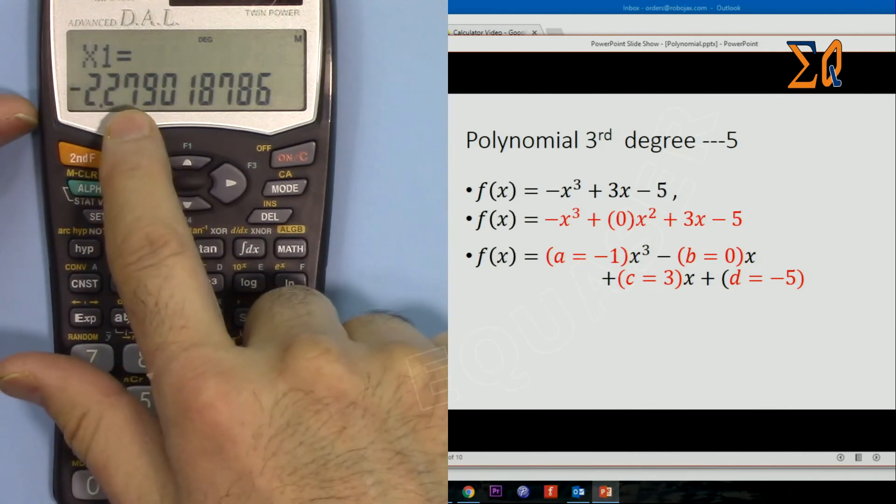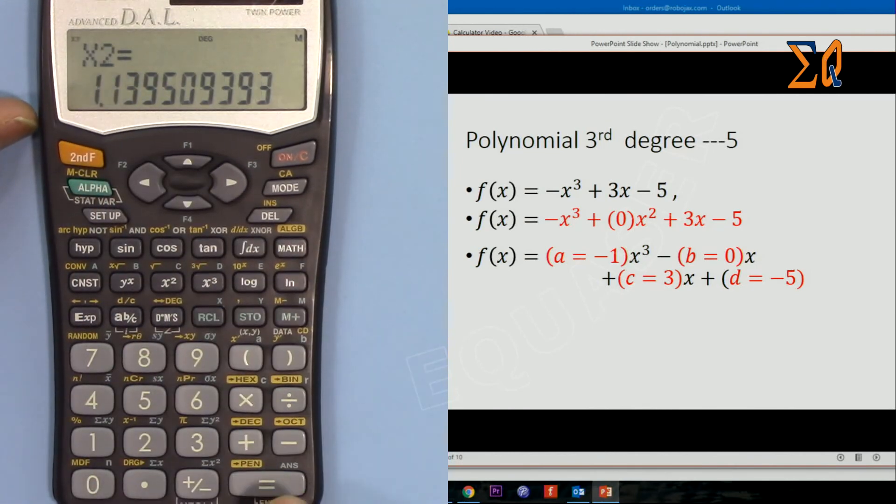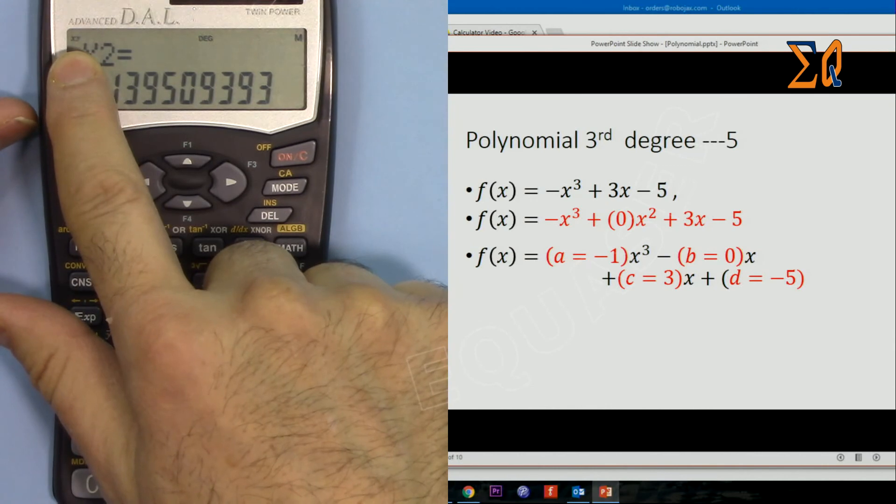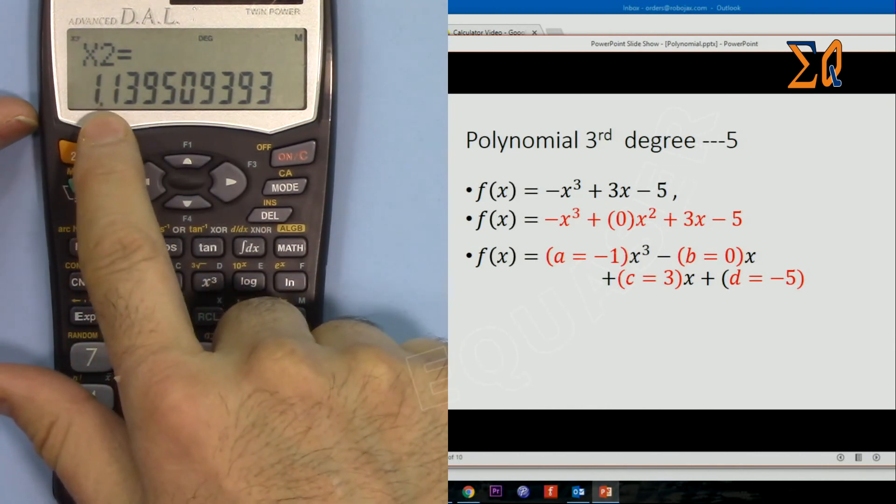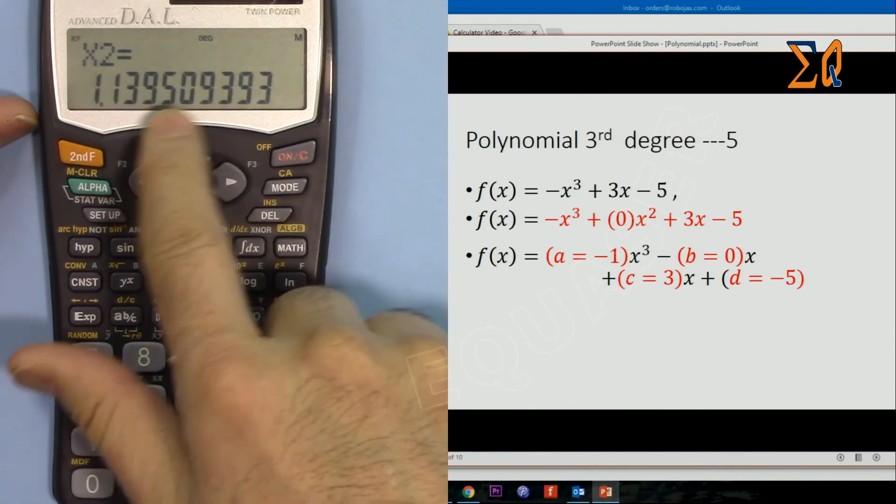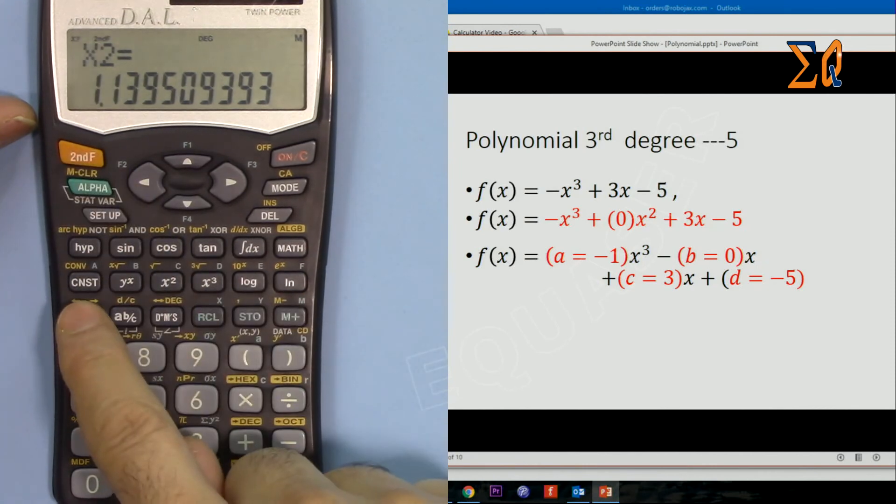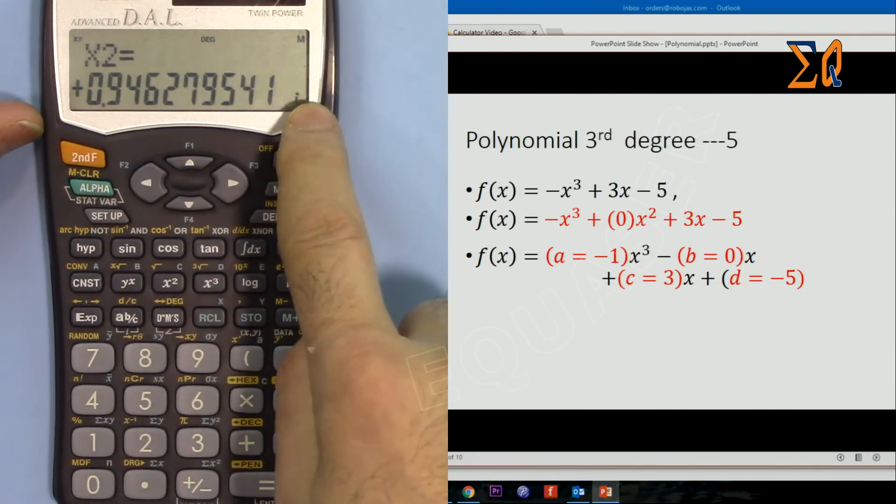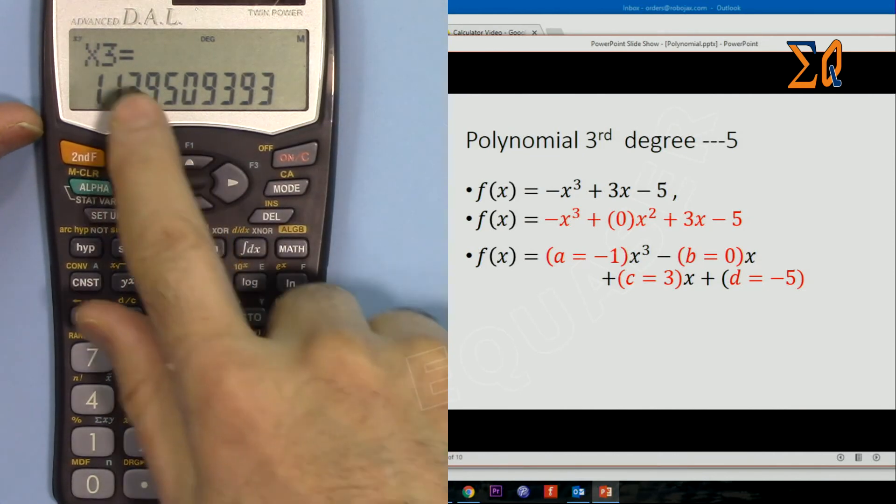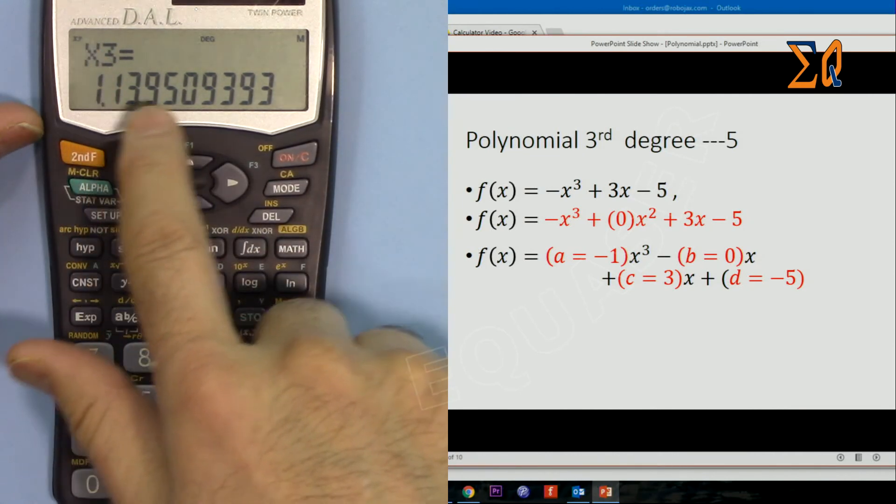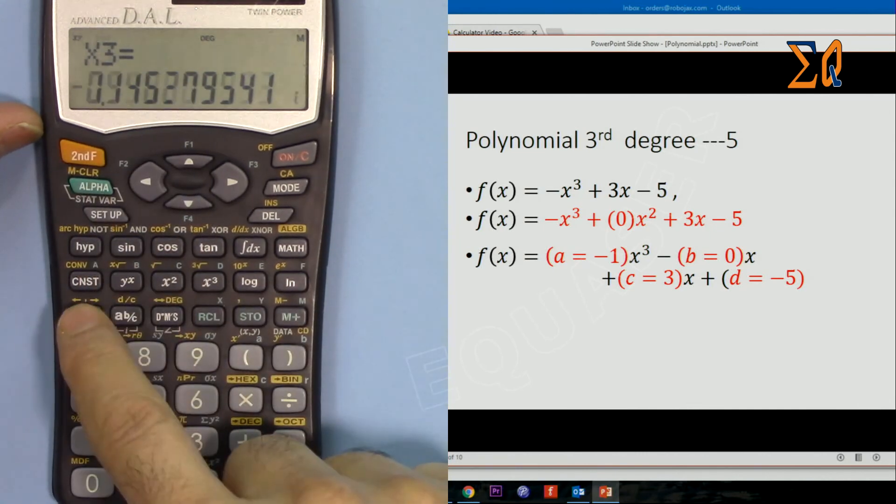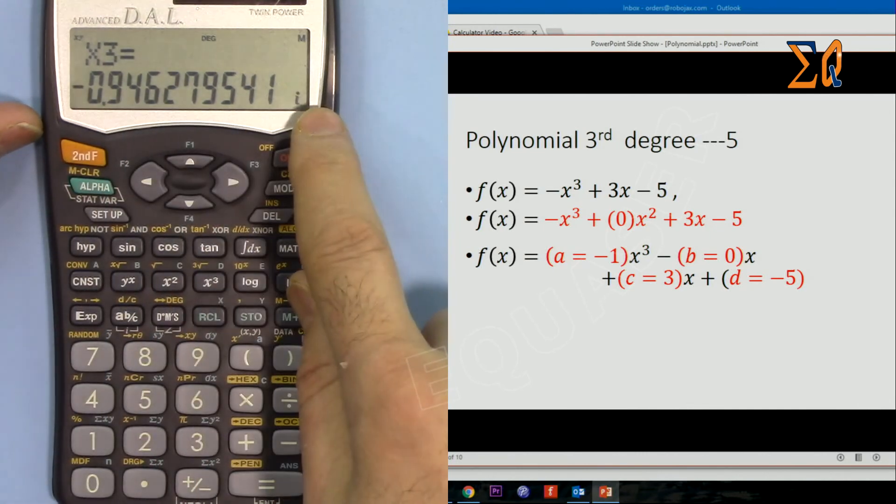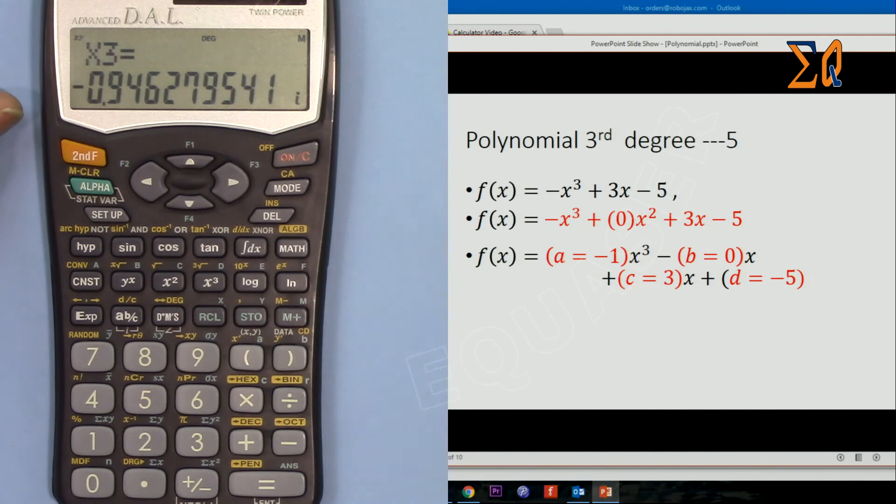Now x1 is -2.2. Press equal sign, and now again X and Y appear here, so this is imaginary part: 1.39, and the second function with this arrow, plus 0.9i. And then equal sign. Again we have imaginary parts: 1.13, and this is -0.95i. So that's the answer for this one.